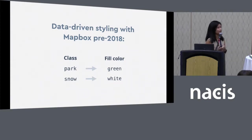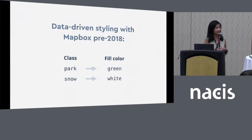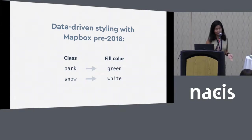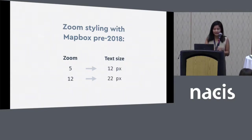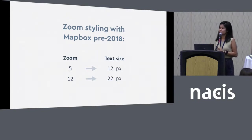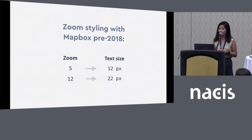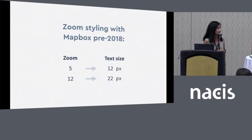Say we have land use and we know the class of a particular feature is a park, so we want to make it green. If the class is snow, we'd want to make it white. The same thing goes for zoom-based styling — you input a zoom level and output the desired style property at that stop, in this case text size.